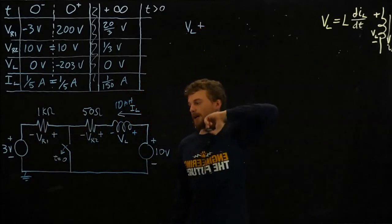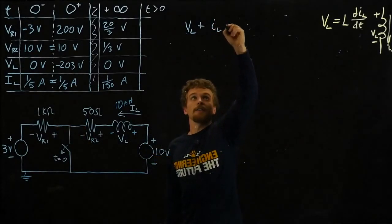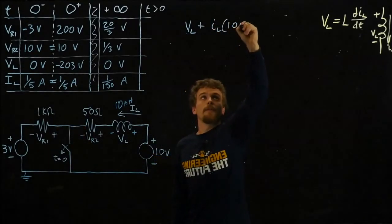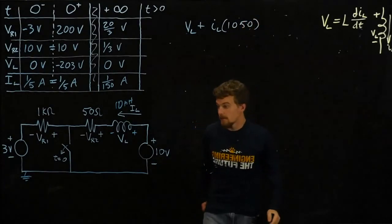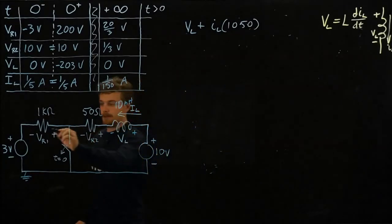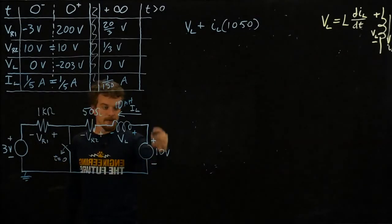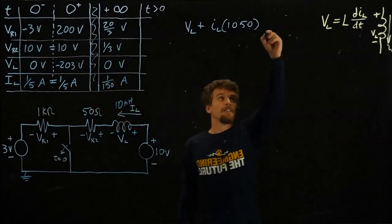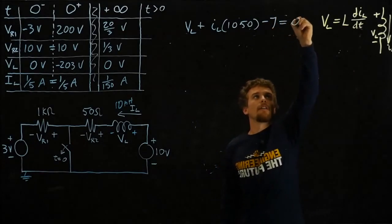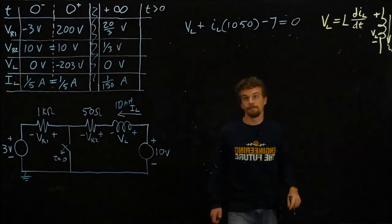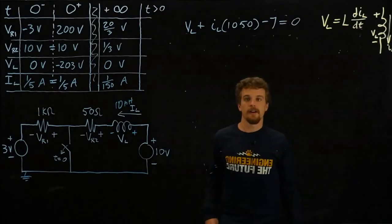Once this is open, IL flows through the whole loop, so the voltage drop across both resistors would be IL times 1050 ohms. And what other voltage contributions do we have? We have plus 3 and minus 10, which adds up to minus 7. So all that equals 0.